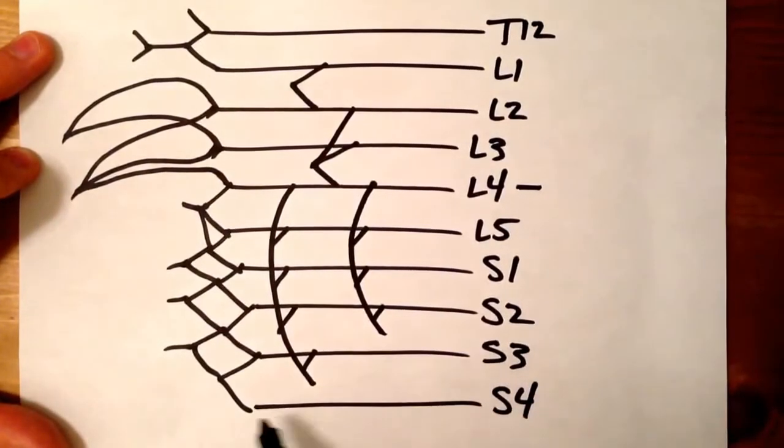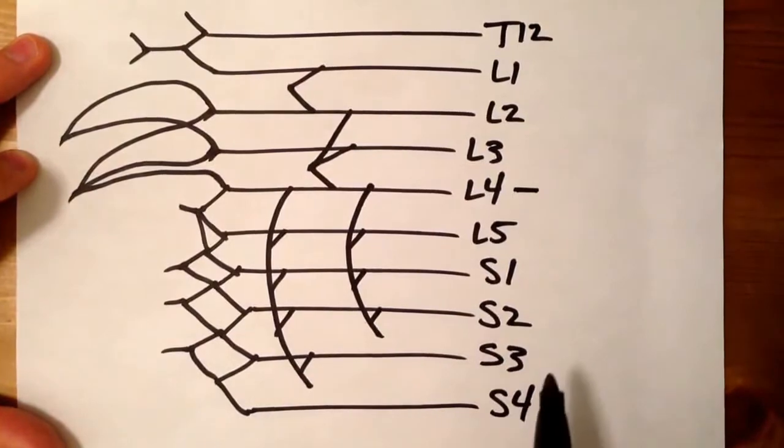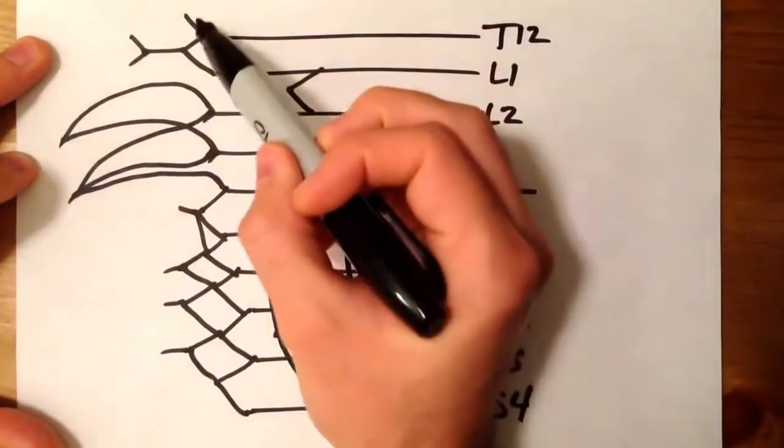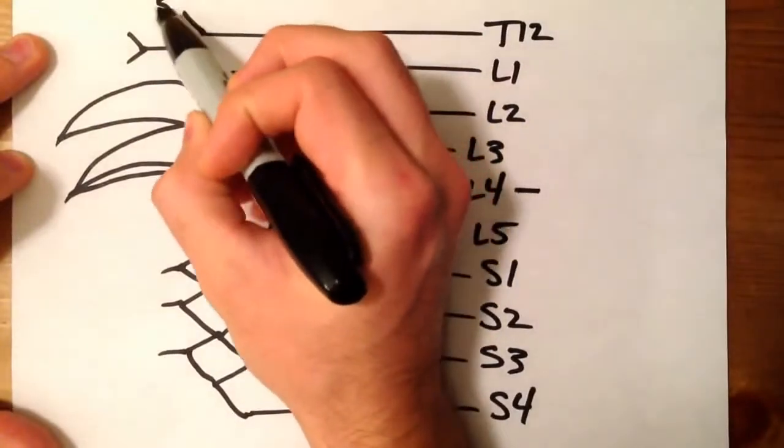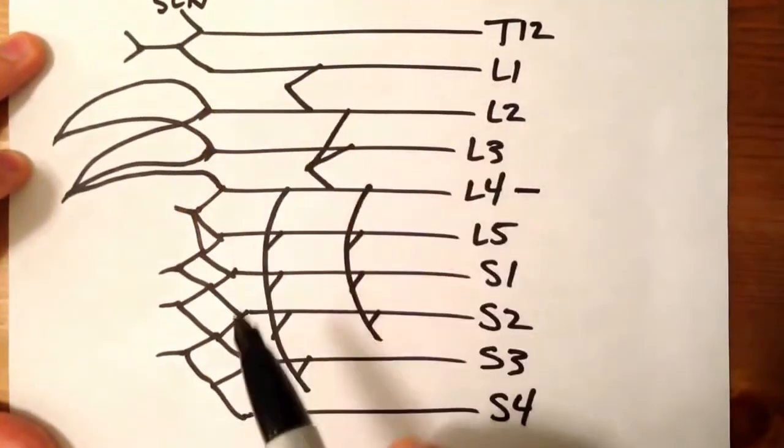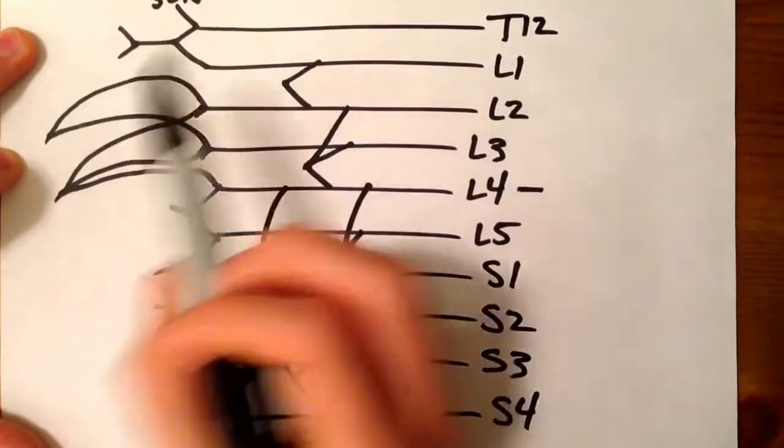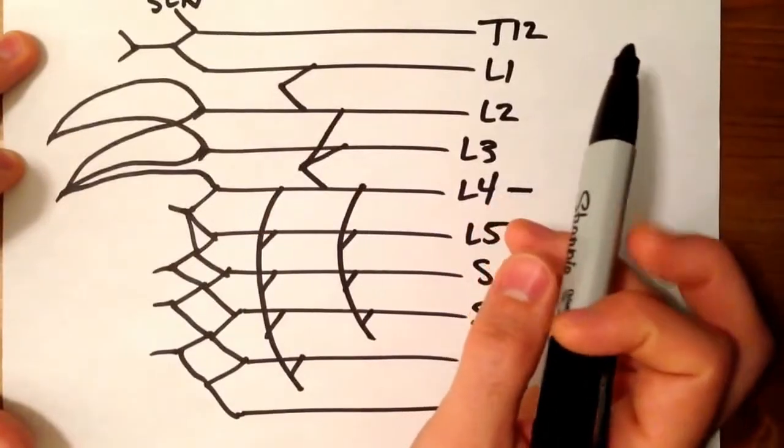So let's go through these. This is pretty much the whole plexus right here, but we'll go through each nerve. So this first branch right here at T12, that's your subcostal nerve.